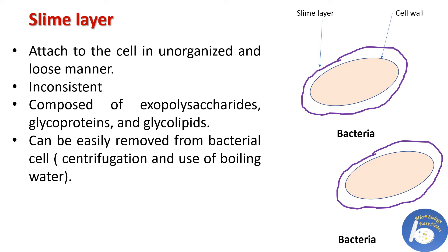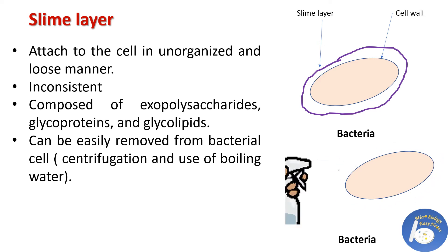When the glycocalyx layer surrounds the bacterial cell in a diffused, unorganized or loose manner, it is called a slime layer. The thickness of the slime layer is inconsistent and it does not provide a definite shape to the cell. It is composed of exopolysaccharides, glycoproteins and glycolipids. It hangs loosely outside the cell and can be easily removed by certain methods.